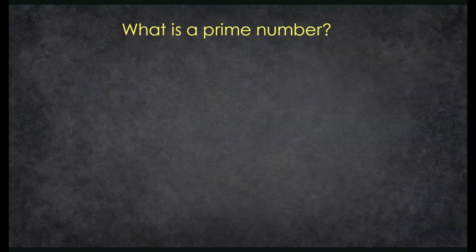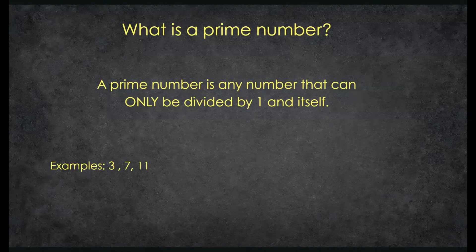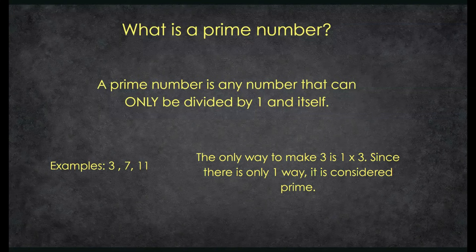So what is a prime number? A prime number is any number that can only be divided by 1 and itself. The only way we can make it is 1 times itself. Some examples of prime numbers: 3, 7, 11. The reason why these numbers are considered prime is there is only one way to make them. The number 3 — 1 times 3, that's it. There's no other way to make 3. 7, the only way to make 7 is 1 times 7. So if there's only one way to make a number, we consider that a prime number.